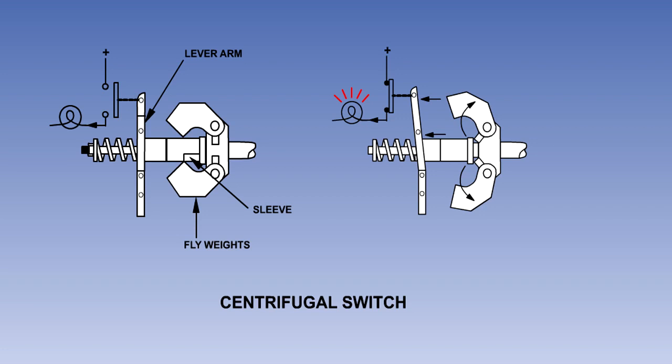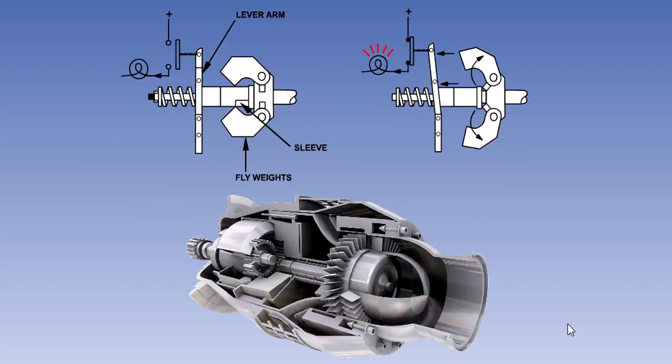At a specific rotational speed, the lever arm will close the switch contacts, and an electrical signal will be sent. Centrifugal switches are commonly used to switch off engine starter motors once the engine reaches self-sustaining speed.